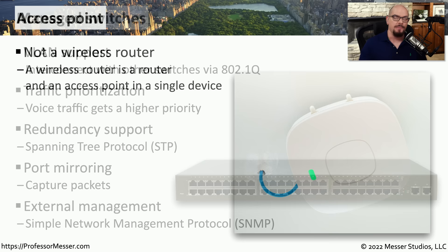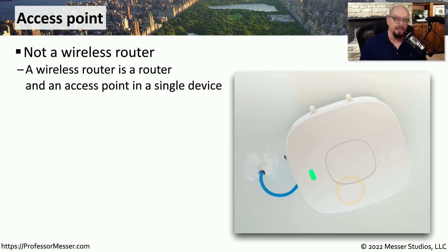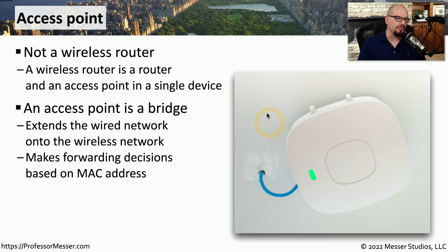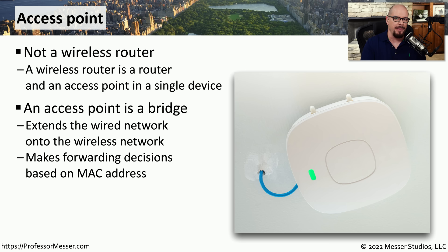If you look at the ceiling in an office or place of business, you may see an access point that provides wireless connectivity for the local network. This is not the router you might find in a SoHo device — it is a device that only provides a link between the wireless network and the wired network. You'll sometimes hear these referred to as a bridge, because they simply bridge or extend that wired connection into a wireless connection. An access point makes forwarding decisions based on the destination MAC address, identical to how a switch forwards information, determining whether to send traffic over the wireless network or to the wired network.